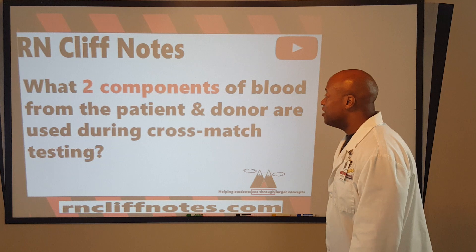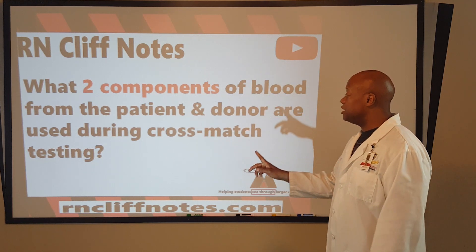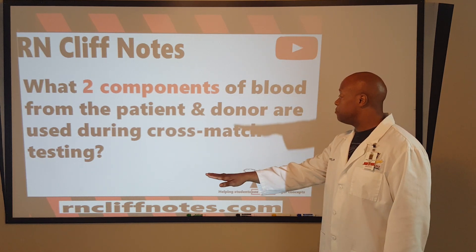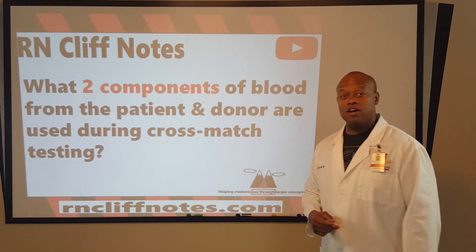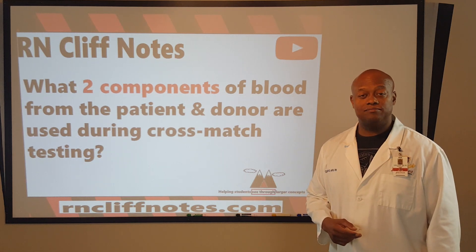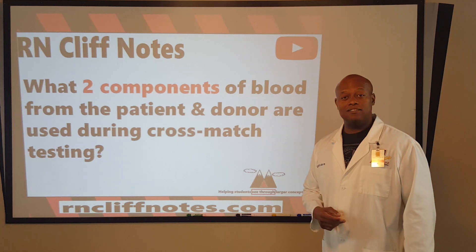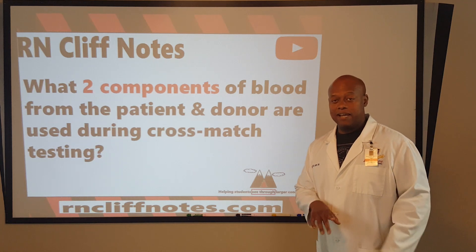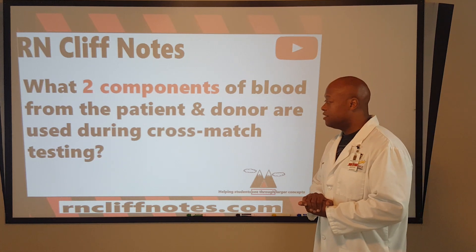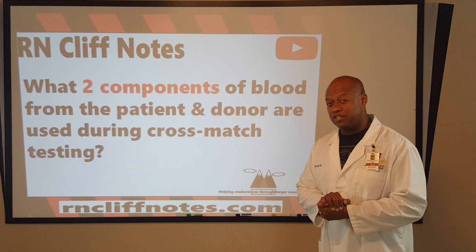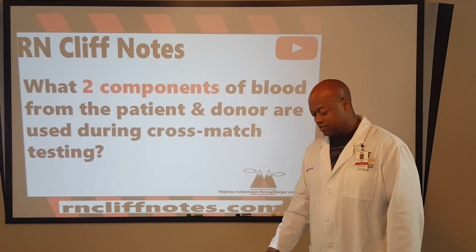So we start out with: what two components of blood from the patient and donor are used during the cross-match testing? Drop that down or type that in — what two components from the patient and the donor are we using when we do a cross-match?